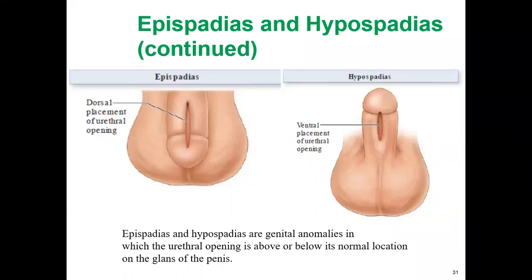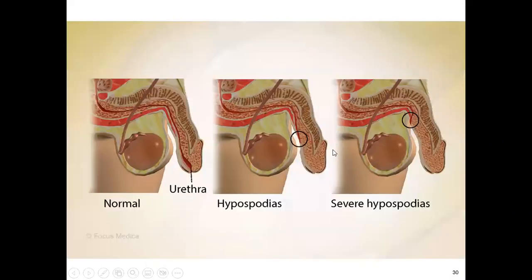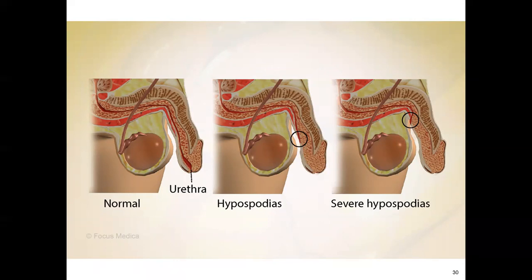Abnormal placement of the urethral meatus on the penis: dorsal placement of the urethral opening refers to epispadias, and ventral placement refers to hypospadias. In this picture we can see the normal urethra at the tip of the penis, compared to hypospadias showing the urethral opening displaced. Hypospadias is a condition in which the opening of the penis is on the underside rather than at the tip, causing a downward curve of the penis and abnormal spraying during urination.